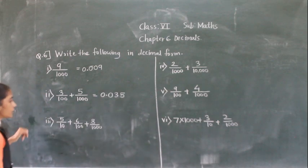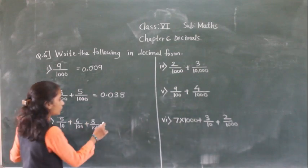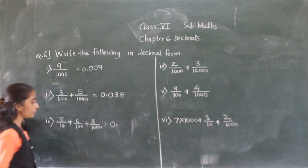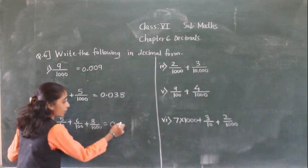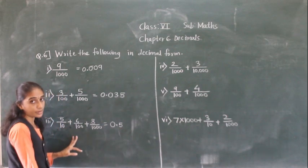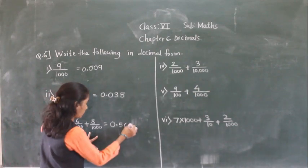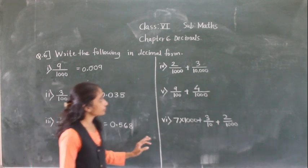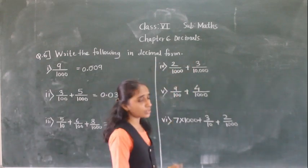Next: 5 upon 10 plus 6 upon 100 plus 8 upon 1000. No whole number is given so write 0, then decimal point. 5 upon 10 means 5 will come at the tenths place, 6 upon 100 means 6 will come at the hundredths place, and 8 upon 1000 means 8 will come at the thousandths place. So 0.568 is the answer.